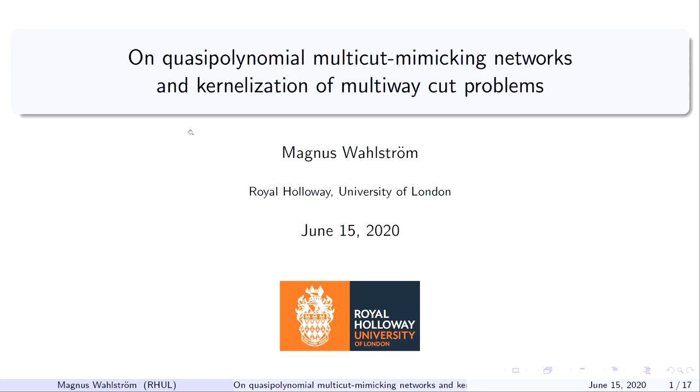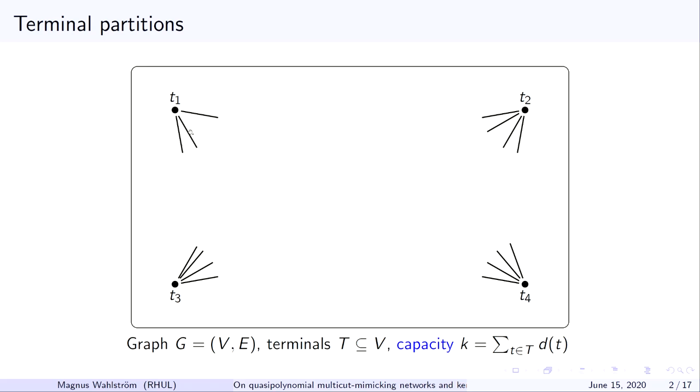So the setup: we're assuming we have a large graph G, a very large graph, and a small number of terminals, and we will let k denote the total capacity of terminals, which means basically the total number of edges incident to terminals, and we are interested in the behavior of this graph with respect to all partitions of the terminal set.